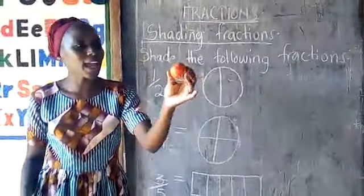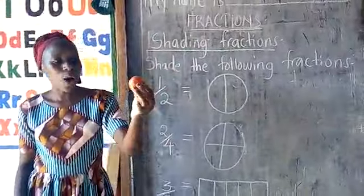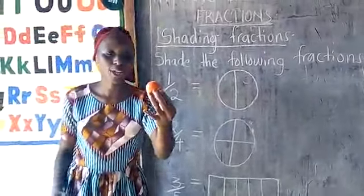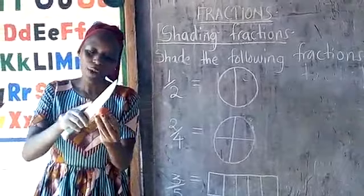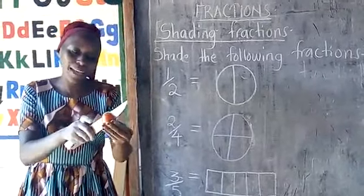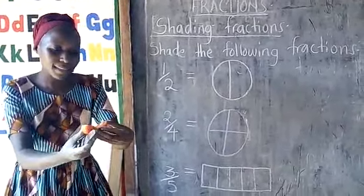As you see here, I have my tomato which is a whole. Now I'm going to get a half from my tomato. That means I'm going to cut it into two equal parts. Two equal parts.